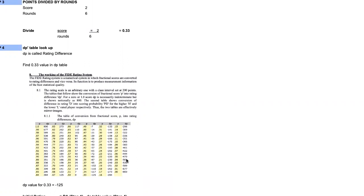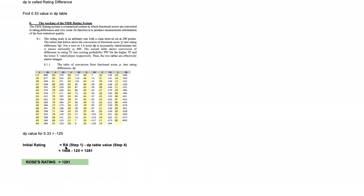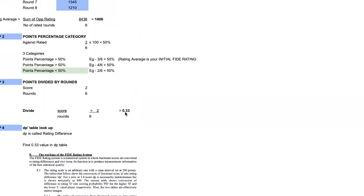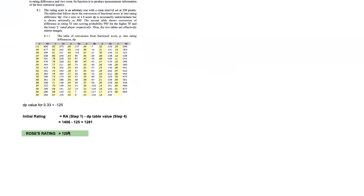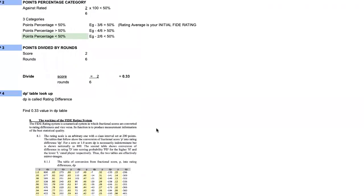The link for this manual will be shared in the description. We check for 0.33 in the DP value table — the DP value is minus 125. So Rose's initial rating is calculated as rating average plus the DP table value: 1406 + (−125) = 1281. We just find the DP value associated with her points divided by rounds, and that comes to 1281. Rose's initial rating would be 1281.